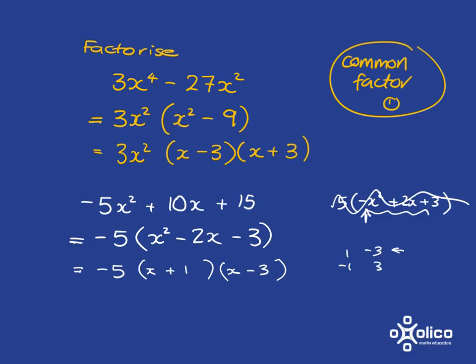So, short story is, always look for a common factor first. And then beyond that, the two types of factorization we've looked at are difference of two squares or factorizing trinomials.